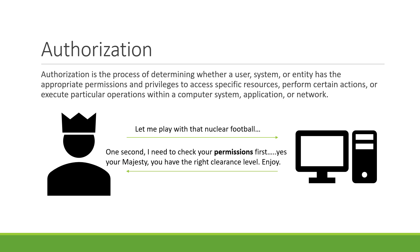Authorization tells you: do you have permission to perform certain actions? In the dialogue, Edward the king of Pandora says 'Let me play with that nuclear football.' The server says 'One second, let me check your permissions.' It checks and finds he is a king with permission, and responds 'You have the right clearance level, enjoy.' Authorization always happens after authentication — you must be authenticated first, then your authorization is checked.